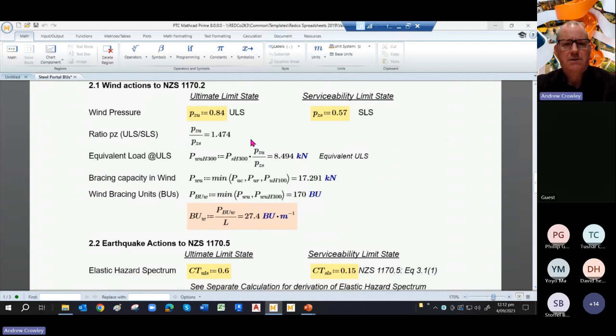We then work out the ratio between ULS and SLS, and here we go, 1.474. We factor that up to give us an equivalent load at ULS. And so the bracing capacity in wind is simply the minimum of these various calculations, which give us 17.2.